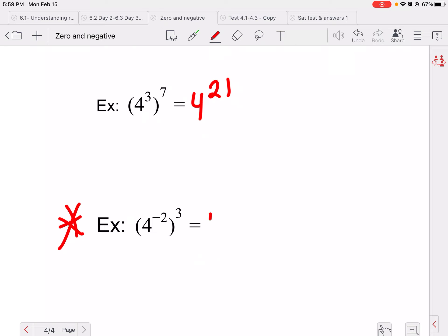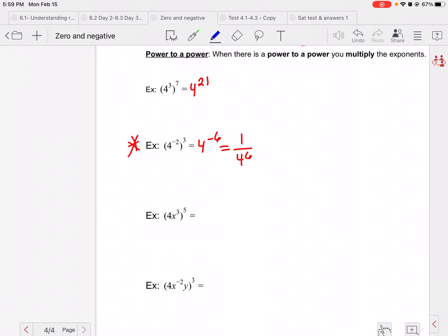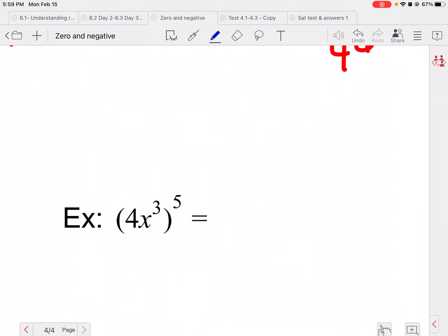So this would be four to the twenty-one, because three times seven is twenty-one. What do you think this one would be? This would be four to the negative sixth, but we don't like negative exponents, so this would really be one over four to the sixth. Hopefully you remember to fix that.